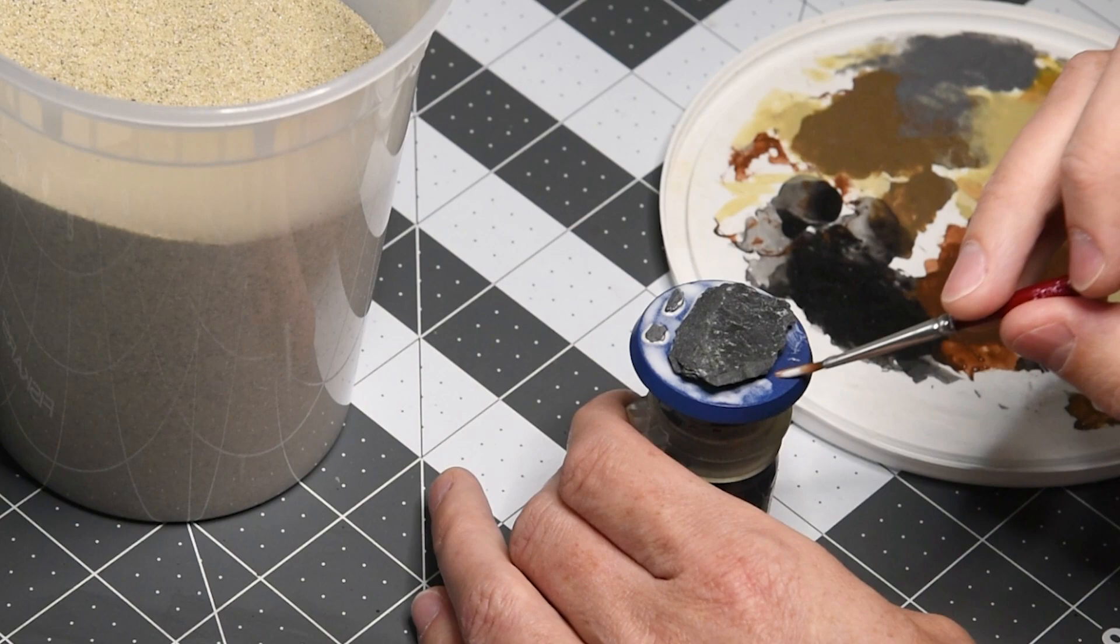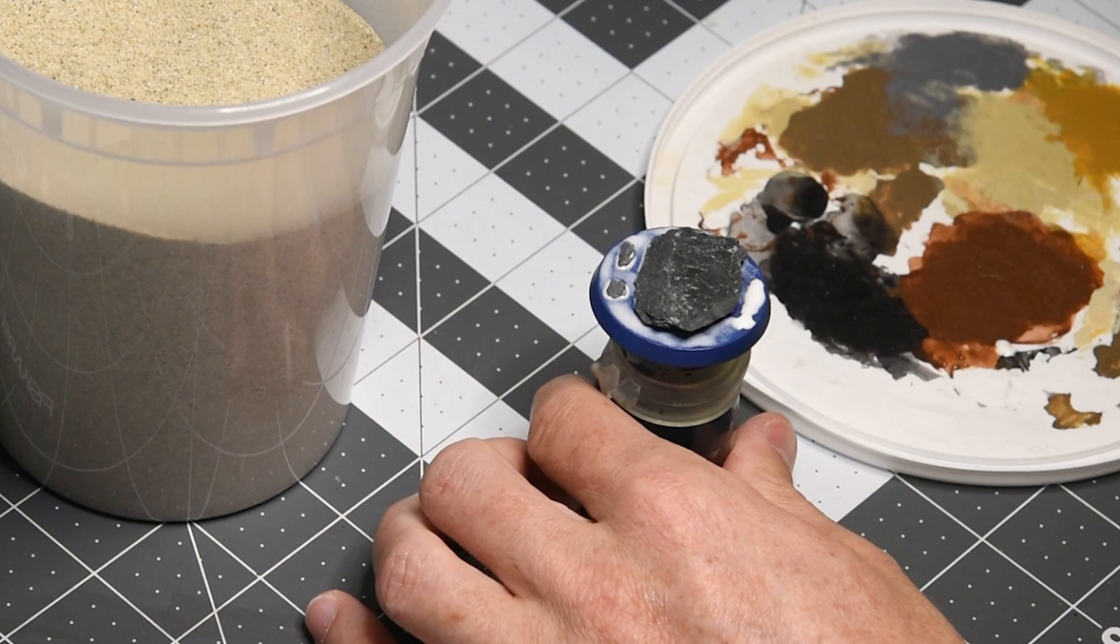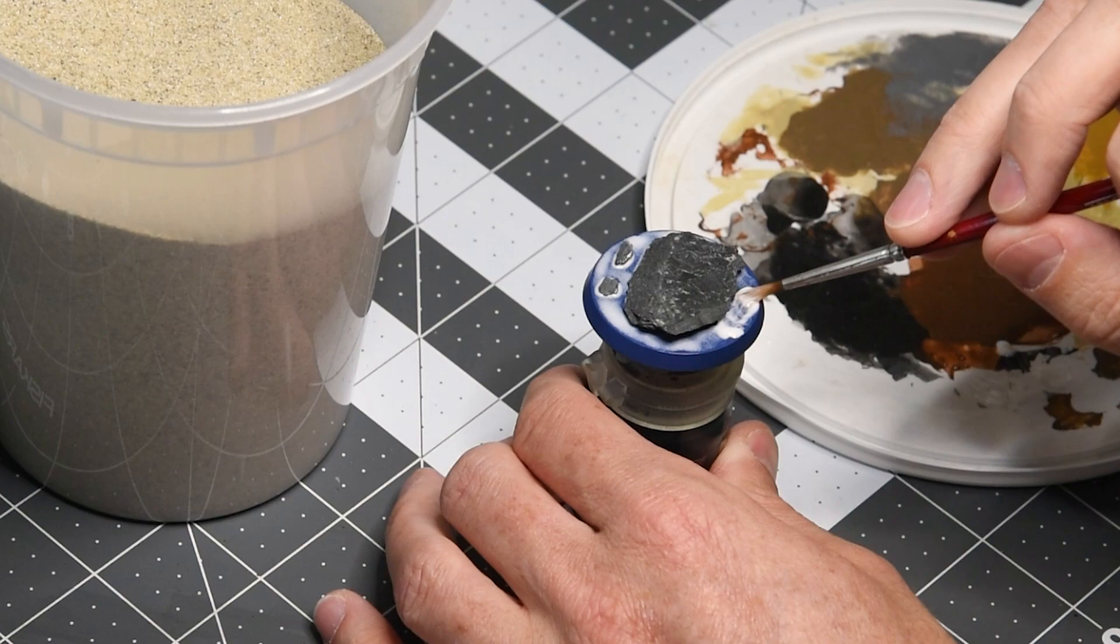Now this base is on the smaller end in comparison to some of the dreadnoughts you've seen in previous tutorial videos of mine. So I'm comfortable applying the PVA across the entire base before I dip. And you'll see I'm applying some of the glue directly to the base here.